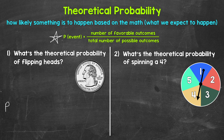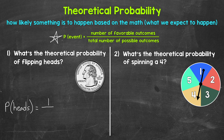So for number one, the probability of flipping heads equals... we need the number of favorable outcomes. How many ways can flipping heads happen? One — one side of the coin has heads. So we have 1 over the total number of possible outcomes, which is 2. There are two sides of the coin, and we have an equal chance of landing on either — heads or tails. So we have a 1 out of 2 chance of flipping heads. Our fraction is one half.